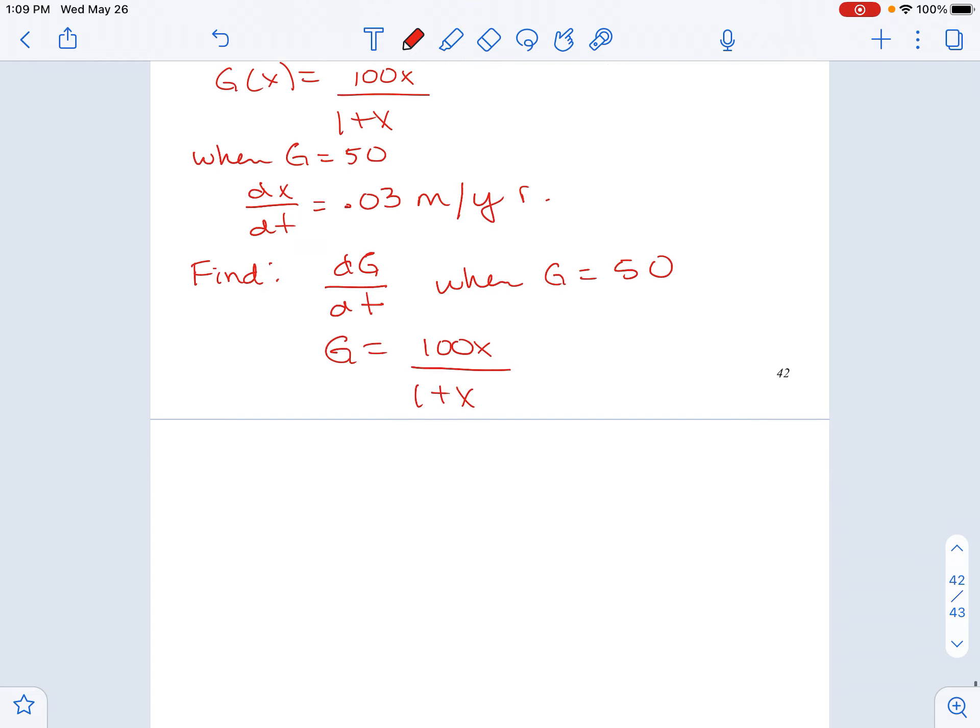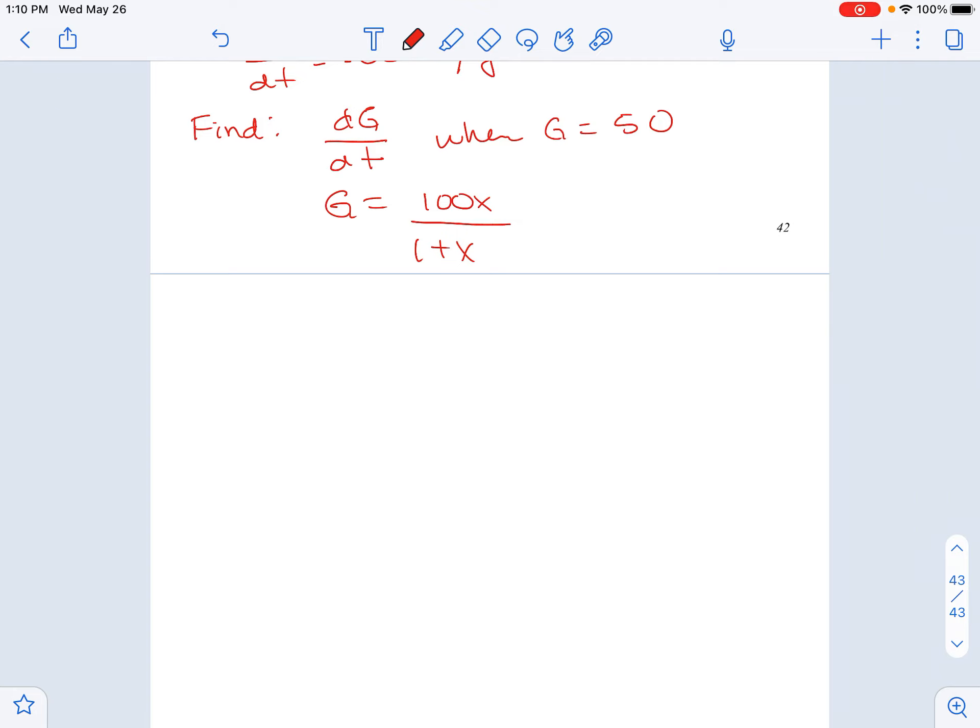So this is the equation they're giving us. We're going to go ahead and take this derivative with respect to t. And if I do that, the derivative of g with respect to t is just dg dt. On the right-hand side, you have variables on the top and the bottom, so you do need to use the quotient rule. So the derivative of the top is 100. You have an x, so the derivative of the x piece is dx dt, times the bottom, minus the derivative of the bottom is dx dt, times the top, all over denominator squared.